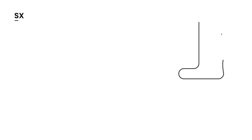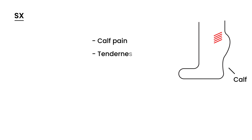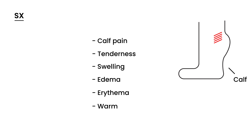Now we can move on to symptoms. The symptoms are calf pain — referring to when the DVT occurs in the calf, which is most common — tenderness on palpation, swelling (edema), redness (erythema), and warmth to the touch. Those are really classic findings. There's another physical exam finding called Homan's sign: you ask the patient to dorsiflex at the ankle, and that will elicit calf pain.